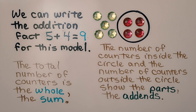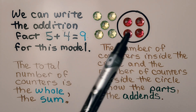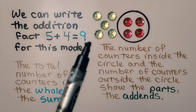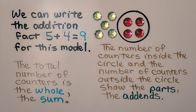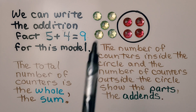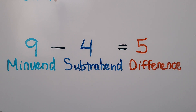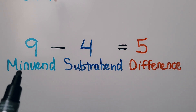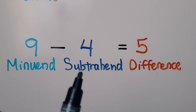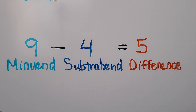We can write the addition fact 5 plus 4 is equal to 9 for this model. The number of counters in the circle and outside the circle show the parts — the addends. The total number of counters is the whole; it's the sum. And remember, this number is the minuend. We're taking away the subtrahend, and the answer is the difference.